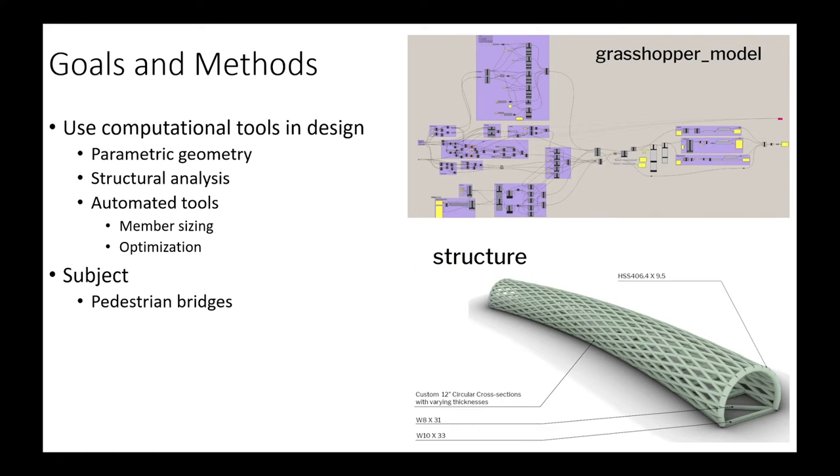The subject of the course is pedestrian bridges for a number of reasons. Pedestrian bridges have a very direct connection between the structural scheme and the visual architectural qualities of the bridge. They are also simply easier to model than buildings. There's a lot of tedium involved in all the different load cases in a building, and pedestrian bridges allow us to get at these issues much more directly.